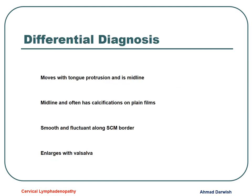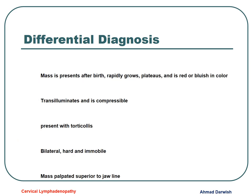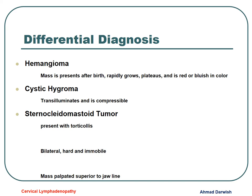For differential diagnosis quizzes: the mass which moves with tongue protrusion and is in the midline — the differential with a branchial lymph node — is a thyroglossal duct cyst. The mass in the midline that often has calcifications on plain films is a dermoid cyst. The mass which is smooth and fluctuant along the sternocleidomastoid muscle is a branchial cleft cyst. The mass enlarging with Valsalva maneuver is a laryngocele. The mass appearing after birth, growing rapidly then plateauing, red or bluish in color is a hemangioma. The mass which is transilluminating and compressible is a cystic hygroma. The mass present with torticollis is mainly a sternocleidomastoid tumor. A mass which is bilateral, hard, and immobile is a cervical rib. Lastly, the mass palpated superior to the jawline is mumps. Thank you.